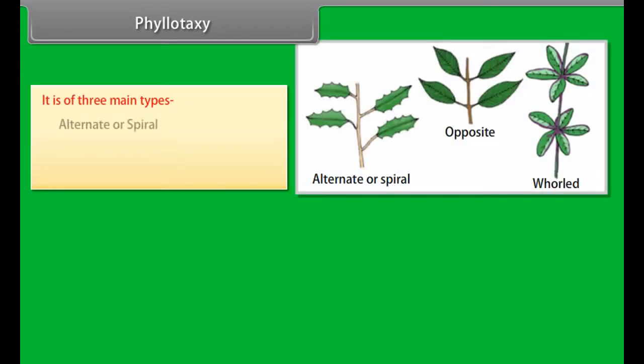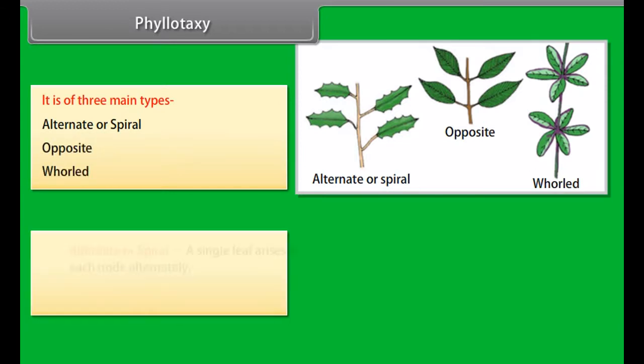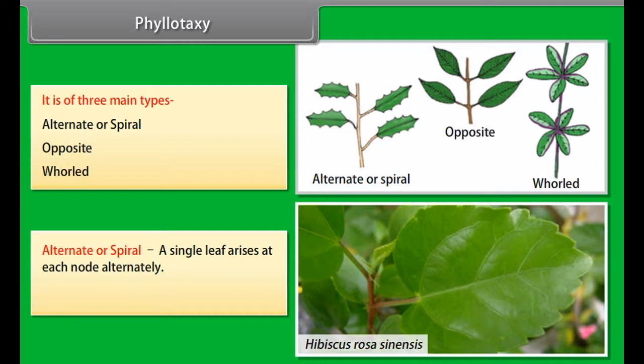Compound leaf: A leaf is said to be compound when its lamina goes down to the midrib, rachis, or to the petiole, so the leaf is broken up into a number of segments called leaflets.